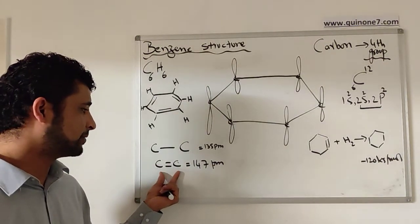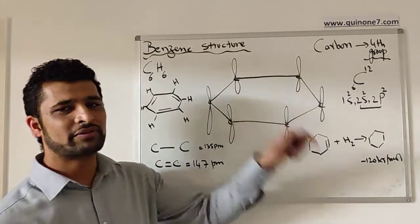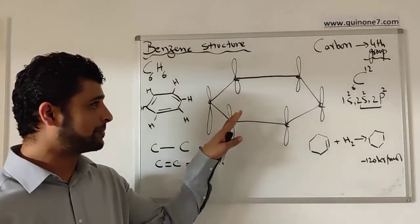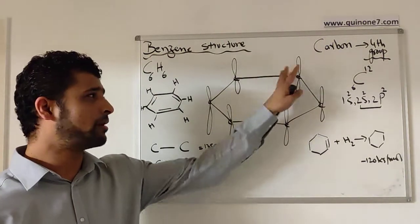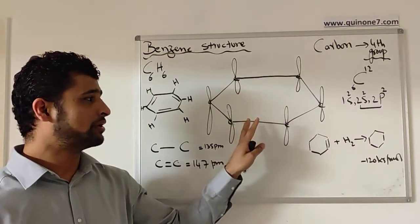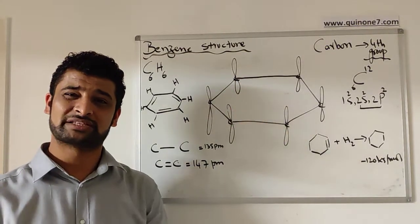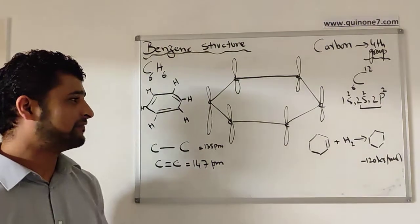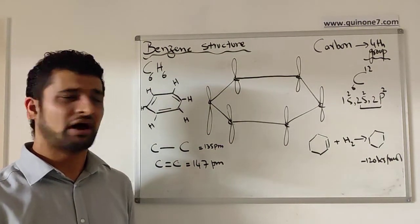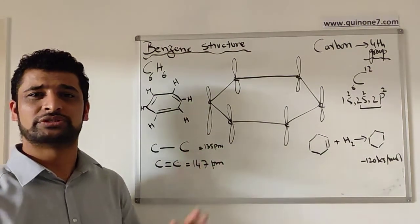But when we look at the structure of benzene, there's a carbon to carbon single bond and also carbon to carbon double bonds - that's what was suggested before. When we use x-ray diffraction, we found that there is no distinct single or double bond, but in fact these pi electrons in the p orbital...